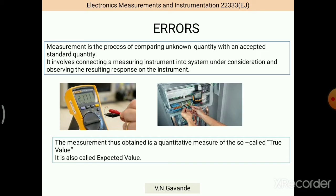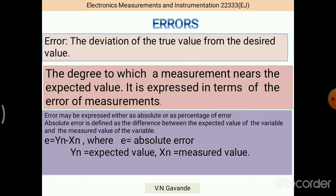In measurement, there is a very important predetermined value and we call that the true value. The measurement thus obtained is a quantitative measure of the so-called true value. It is also called expected value.